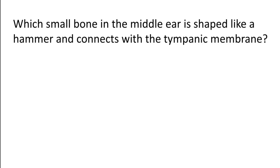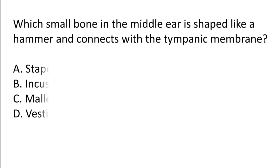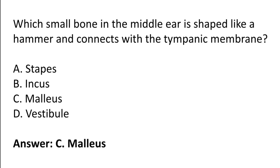Which small bone in the middle ear is shaped like a hammer and connects with the tympanic membrane? Options: Stapes, Incus, Malleus, Vestibule. The correct answer is option C — the Malleus in the middle ear is shaped like a hammer and connects with the tympanic membrane.